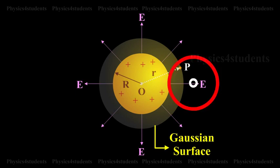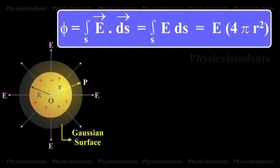The flux crossing the Gaussian sphere normally in an outward direction is φ equals integral E vector dot ds vector equals integral E ds equals E times 4πr².